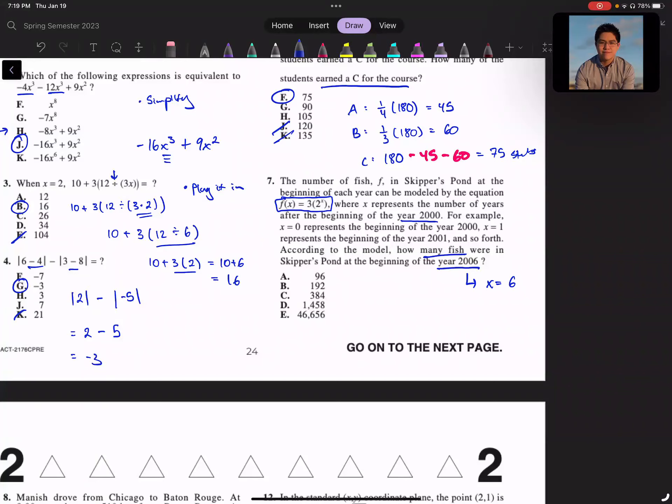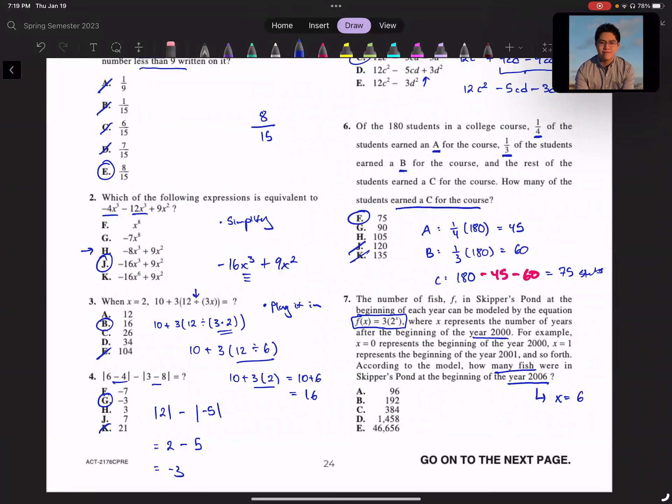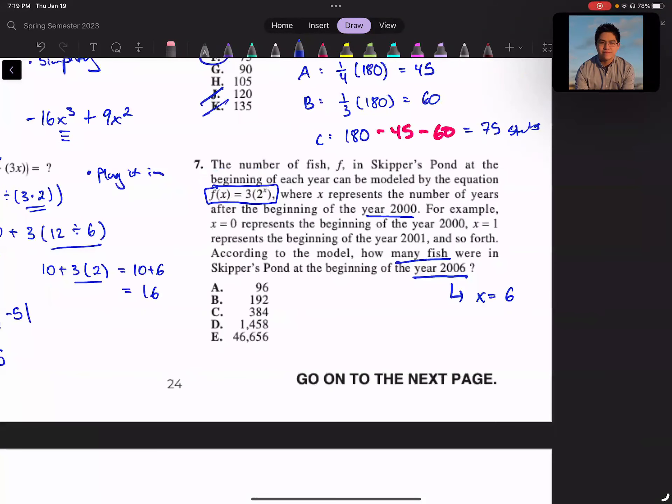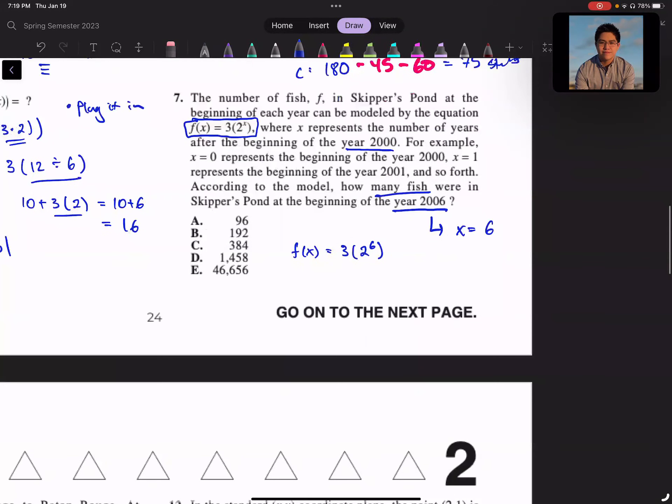So the question asks how many fish in the year 2006. Basically we found this model, they give us the model, and then we have to think what is x. x is the number of years after 2000, because x = 1 is 2001. So if it's 2006, that must mean x = 6. So from there, let's plug it in. Very similar to problem 3, except they give us a function. The number of fish will be 3 × 2^6. Notice the PEMDAS, you have to do 2^6 first. 2^6, you type that into a calculator, that would be 64. So you get 3 × 64, which is 192 fish. That generally makes sense.